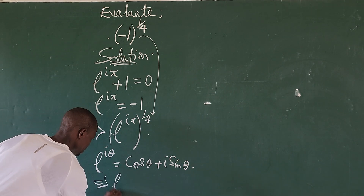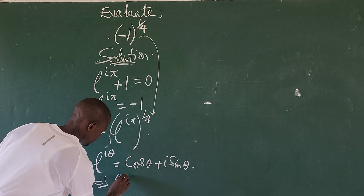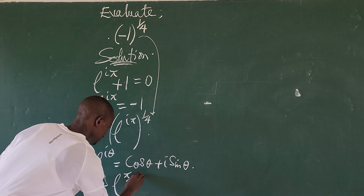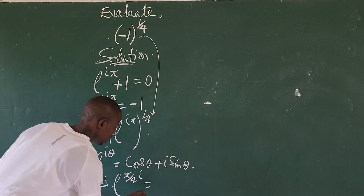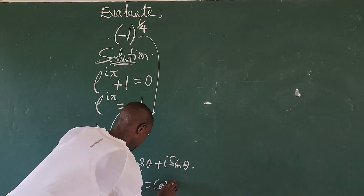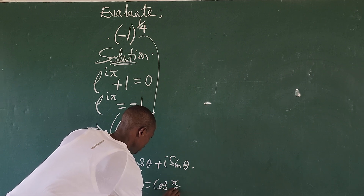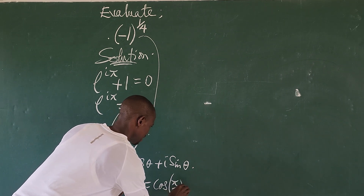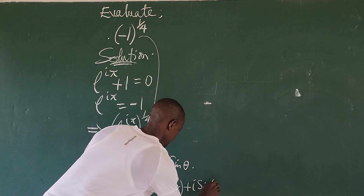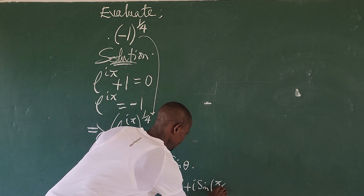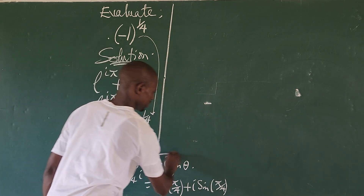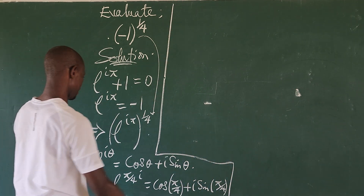So rewriting, this implies that e raised to iπ over four will be equal to cosine of π over four, in brackets, plus i times sine of π over four, in brackets.